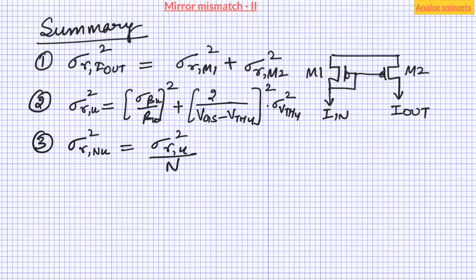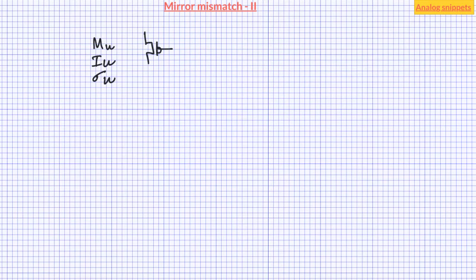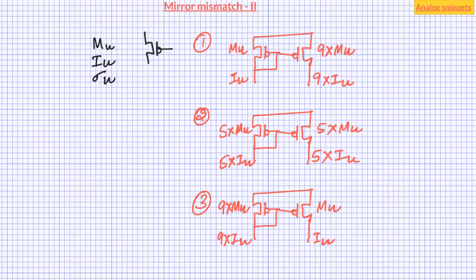Here is something to think about: suppose we have 10 transistors arranged in three different configurations that differ in how the bias transistor and output transistors are sized. Try to figure out the absolute and relative current errors for all three configurations. Which gives the least absolute current mismatch and which gives the least relative current mismatch? Can you justify these results intuitively? In the next video we will discuss tips to minimize current mirror mismatch and will also touch upon layout aspects. Post your comments below and thanks for watching.